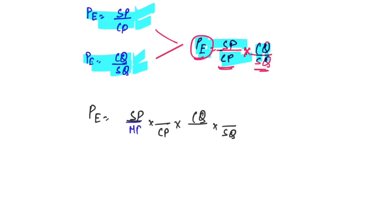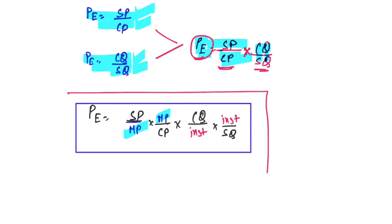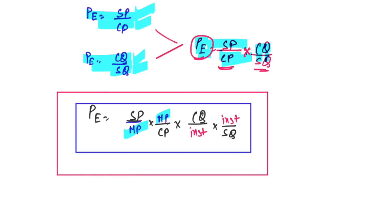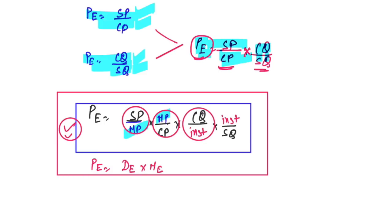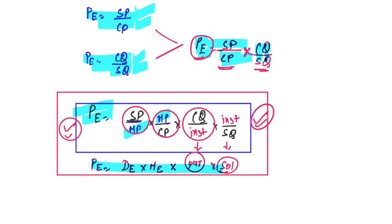Now inserting mark price into the formula: mark price cancels out in numerator and denominator, giving SP/CP. This is the initiative behind the cheat code. So: profit effect = (SP/MP) × (MP/CP) × (cost quantity/instead of) × (instead of/selling quantity). SP/MP is the discount effect, MP/CP is the markup effect, and the quantity terms represent cheating during purchase and during selling.